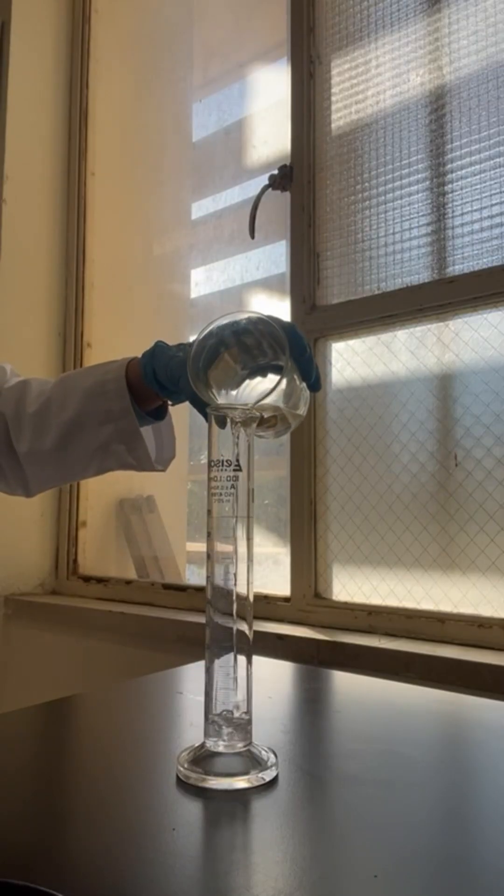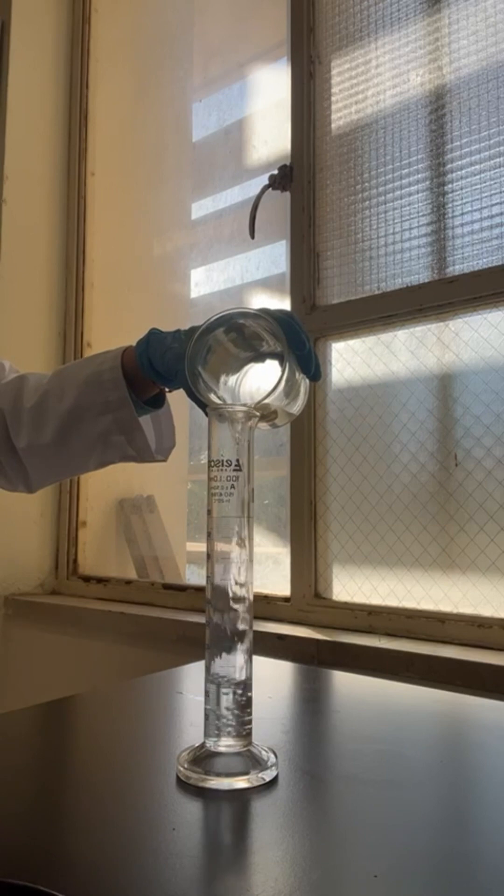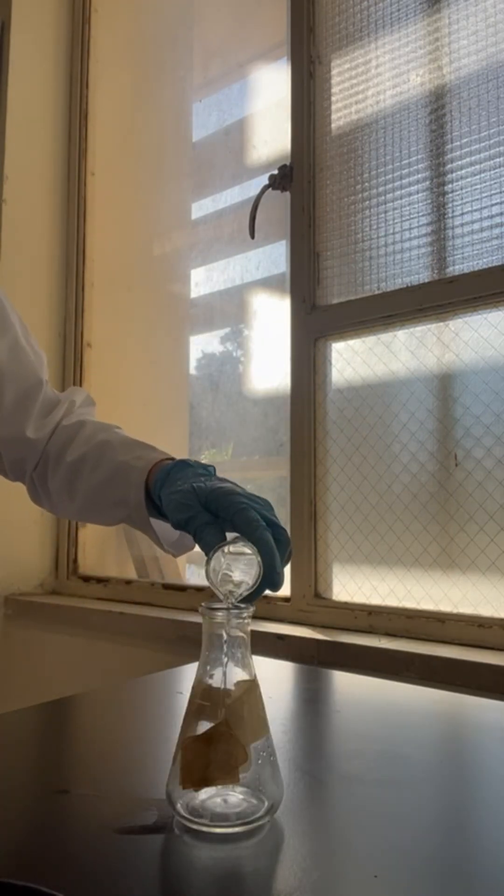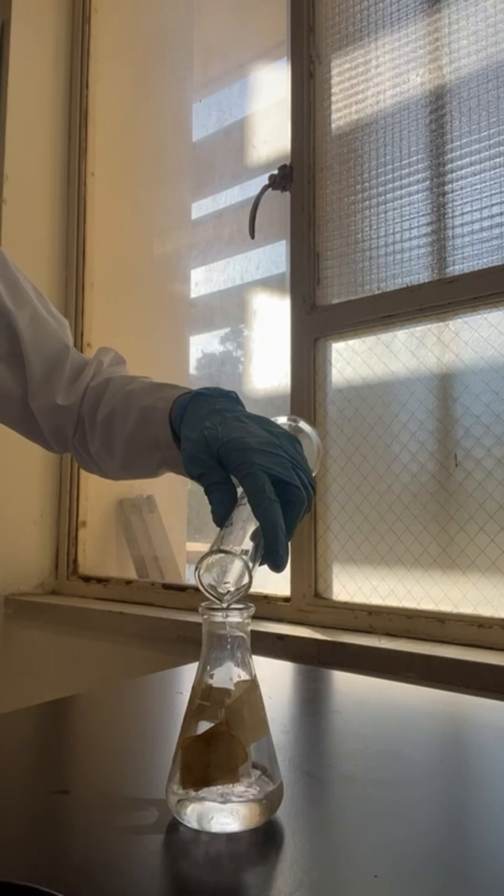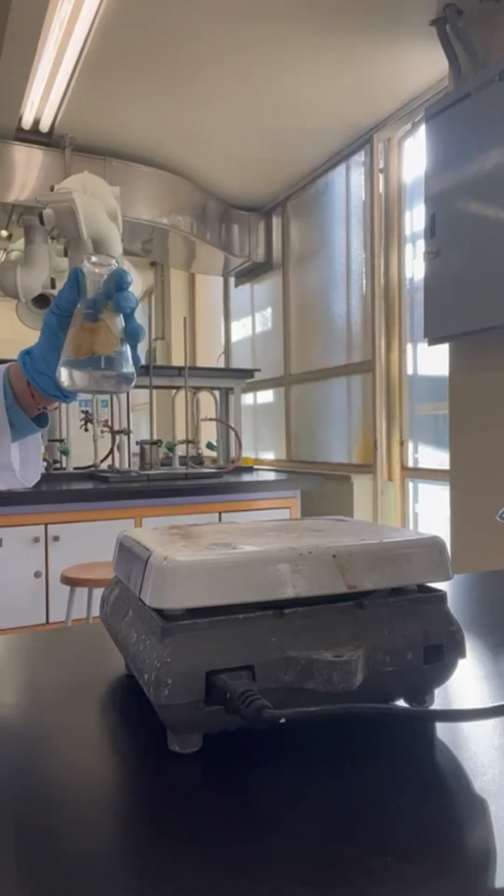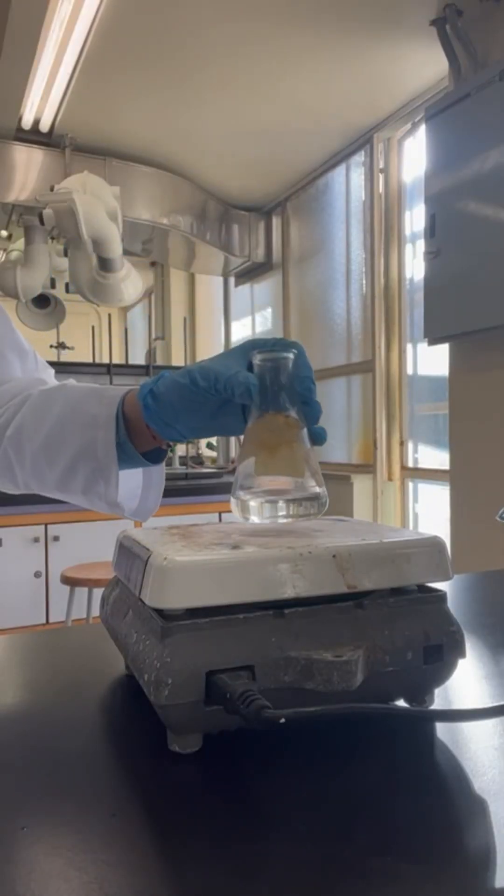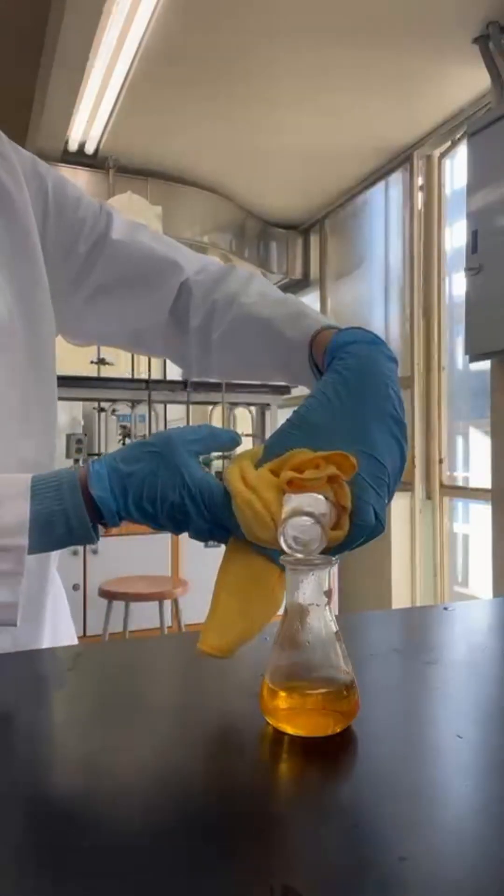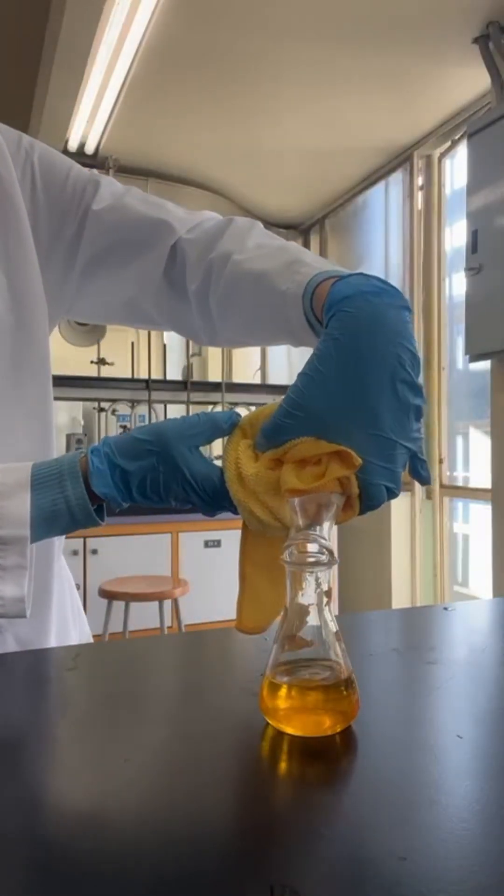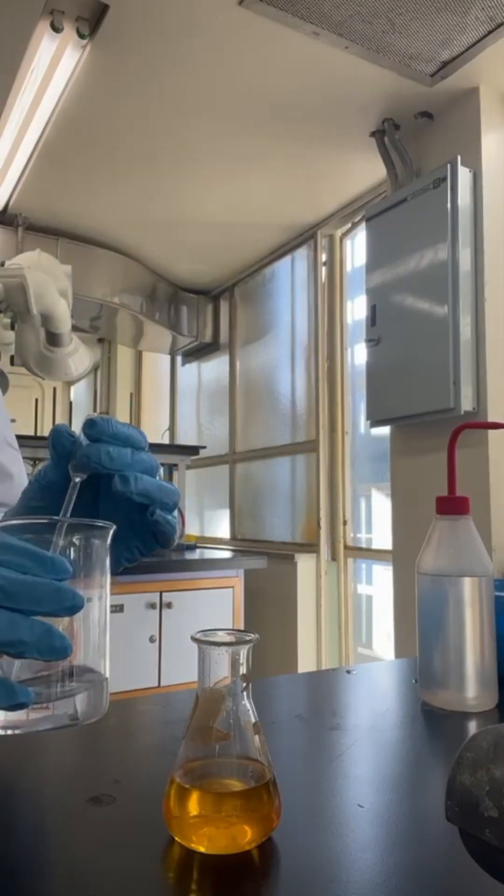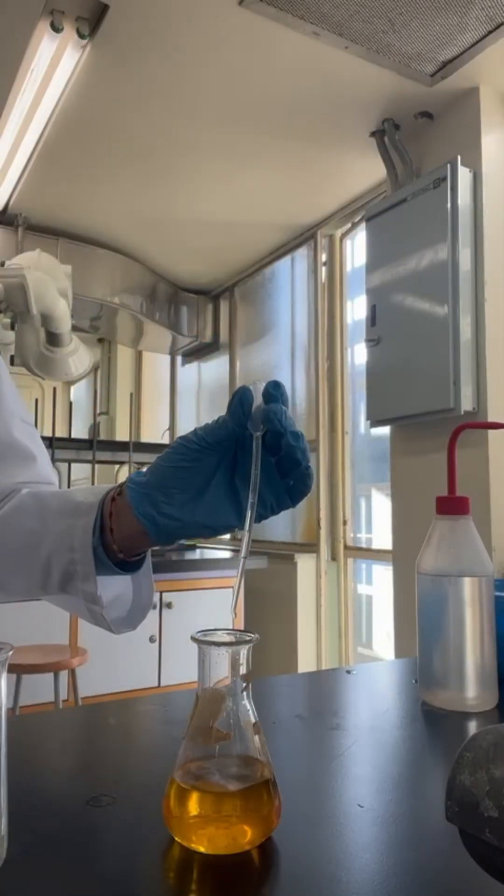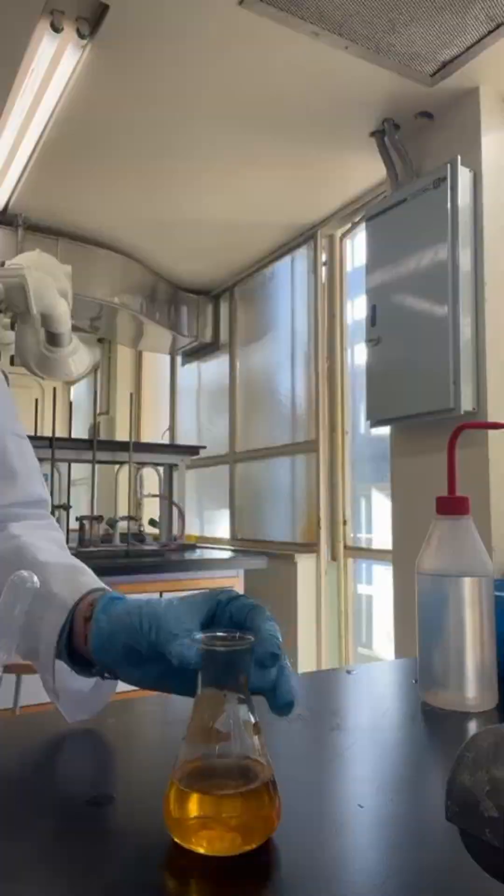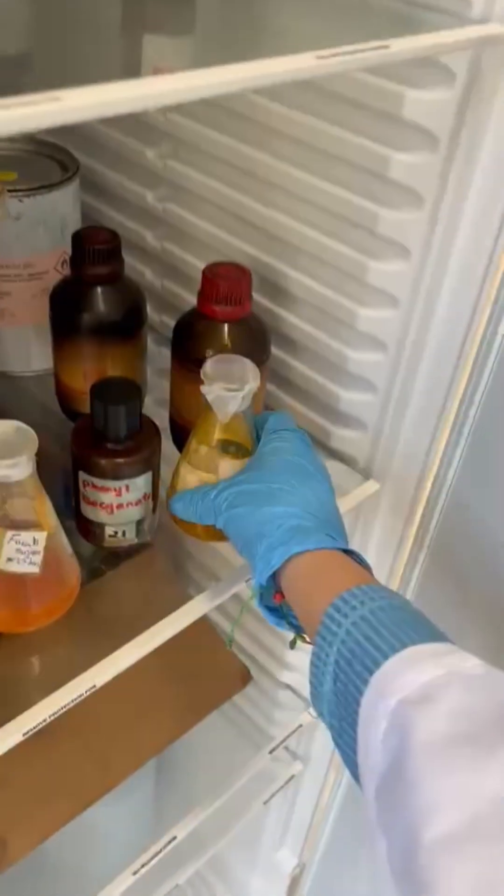I measure 30 milliliters of ethanol in a graduated cylinder, pour this into an Erlenmeyer flask, and place it on the hot plate for it to boil. If the precipitate does not dissolve in the hot ethanol, I add a little bit of ethyl acetate drop by drop until it dissolves, and then I place the solution into the fridge until the next lab session.